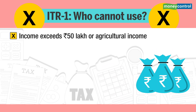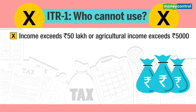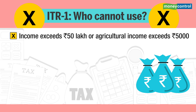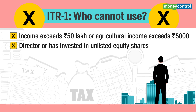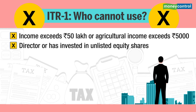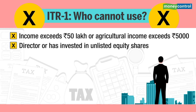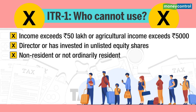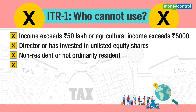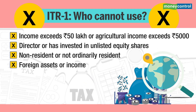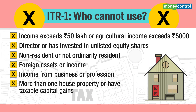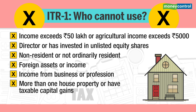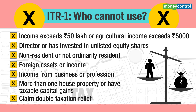Who cannot use ITR-1? If total income exceeds Rs 50 lakh or agricultural income exceeds Rs 5,000, this form cannot be used. It cannot be used by an individual who is either a director in a company or has invested in unlisted equity shares. Assessees who are non-resident or not ordinarily resident, having foreign assets or foreign income, income from business or profession, more than one house property, taxable capital gains, or those claiming double taxation relief cannot use ITR-1.